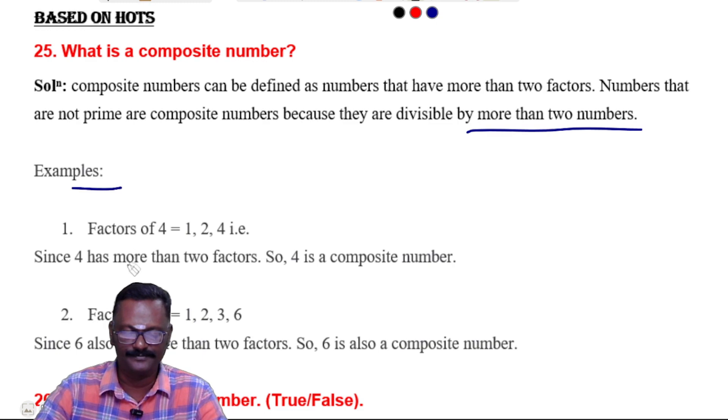Example: The factors of 4 are 1, 2, and 4. Since 4 has more than two factors, so 4 is a composite number. Factors of 6 are 1, 2, 3, and 6. Since 6 also has more than two factors, so 6 is also a composite number.